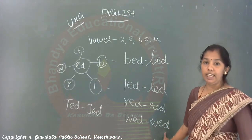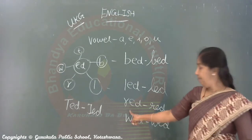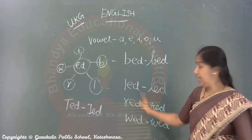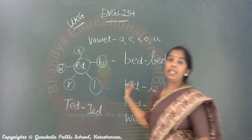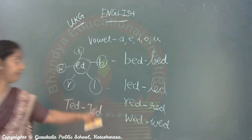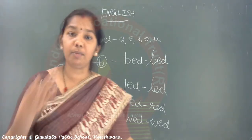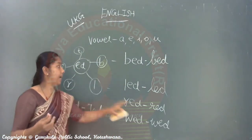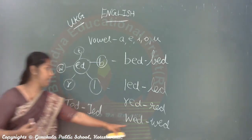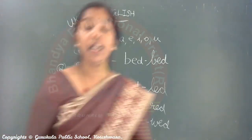W-E-D, wed. Wedding — one more word for marriage. R-E-D, red. L-E-D, lead. B-E-D, bed. Hope you understood this. Please pronounce it properly: B-E-D bed, L-E-D lead, R-E-D red, W-E-D wed, T-E-D Ted.